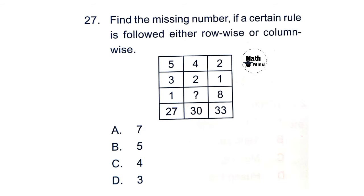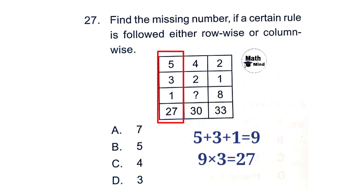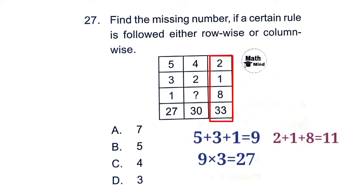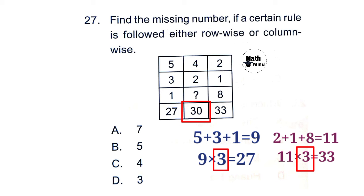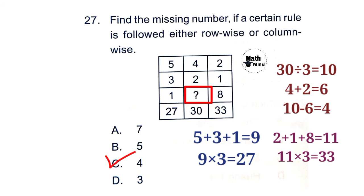Question 27: Find the missing number if a certain rule is followed either row-wise or column-wise. We solve this column-wise. In the first column, adding the first three numbers: 5+3+1=9, and 9×3=27. Similarly, in the third column: 2+1+8=11, and 11×3=33. In the middle column, the sum multiplied by 3 gives 30, so the sum is 30÷3=10. Since 4+2+?=10, we get ?=10−6=4. Option C is correct: 4.